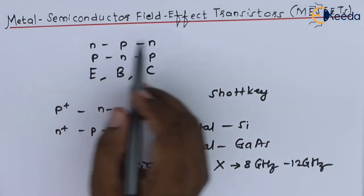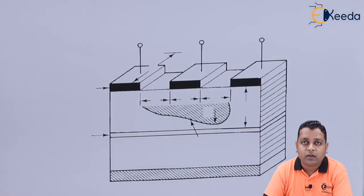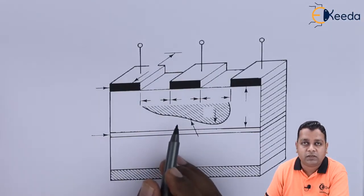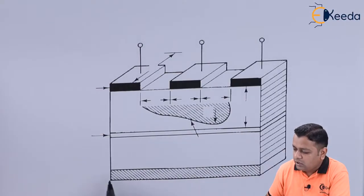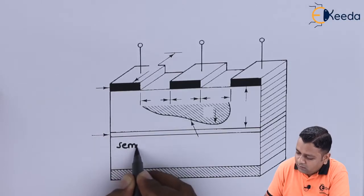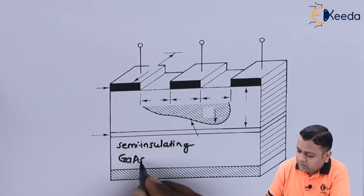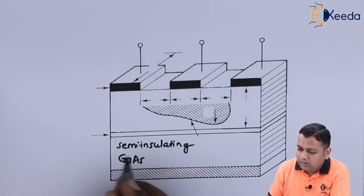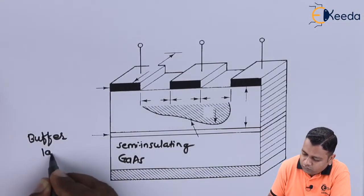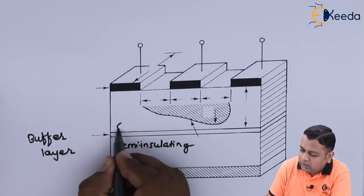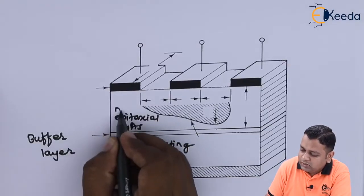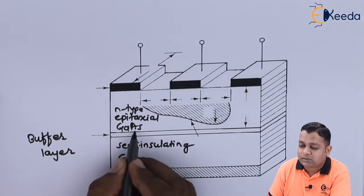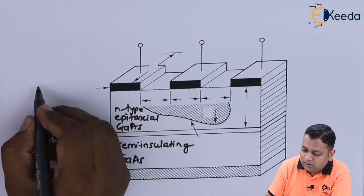FETs have unipolar operation with majority charge carriers. The MESFET can be manufactured using the epitaxial process or ion implantation. In the schematic diagram, starting from the bottom, we have a semi-insulating gallium arsenide substrate. Above it is a buffer layer, which is again gallium arsenide developed by the epitaxial process, followed by the N-type epitaxially grown gallium arsenide material.